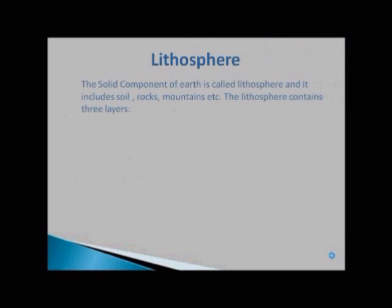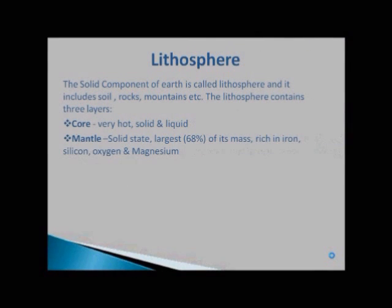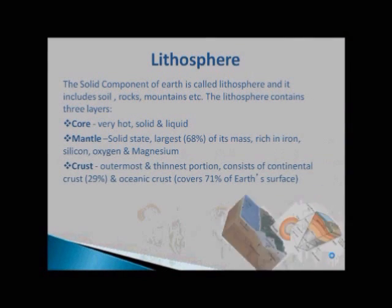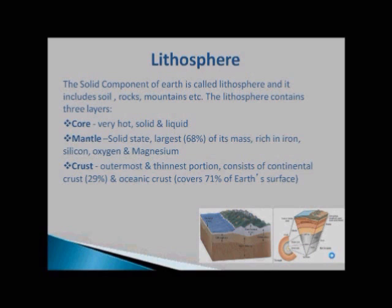First is Lithosphere. The solid component of Earth is called Lithosphere and it includes soil, rock, mountains, etc. It consists of three layers. First one is Core. It is very hot. It may be solid or liquid or both.